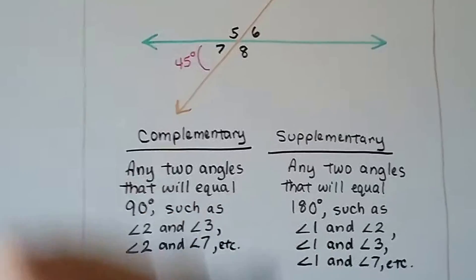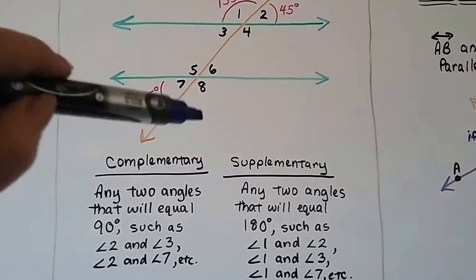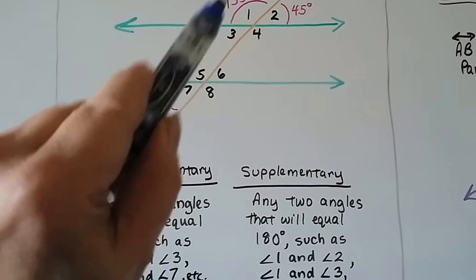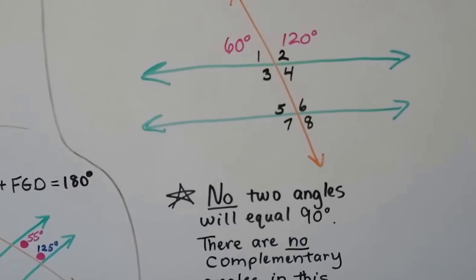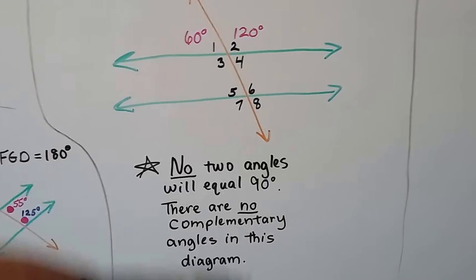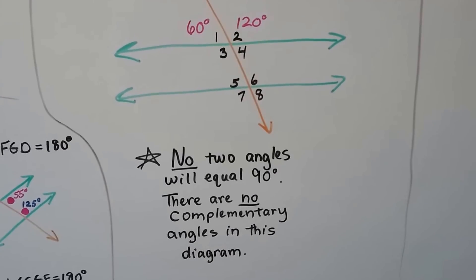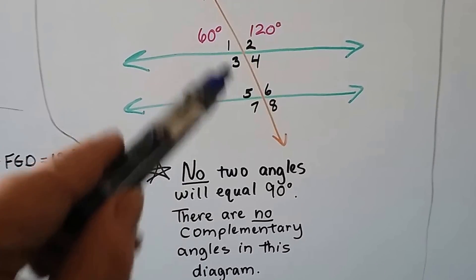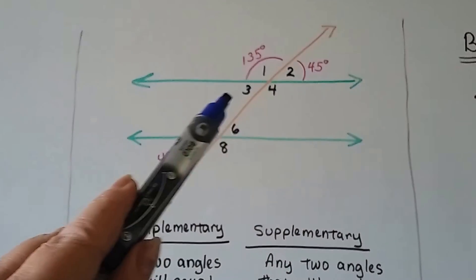Which ones are supplementary? Any two angles that total 180 — it could be 1 and 7, or 2 and 8, or 1 and 2, or 3 and 4. When you see a straight line, that is the supplementary angle. Now take a look at this drawing — it has a 60-degree angle and a 120-degree angle. There are no two angles that will equal 90 degrees: 60 and 60 is 120, and 120 and 120 is 240. We can't find the sum of two angles equaling 90, so there are no complementary angles in this diagram. We see supplementary ones, but none are complementary.